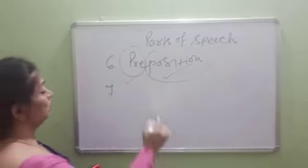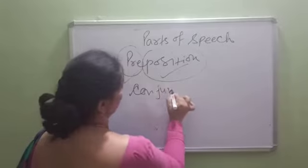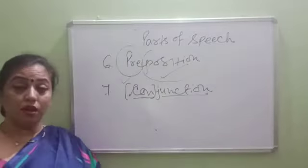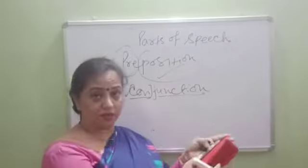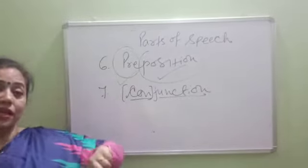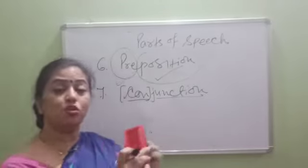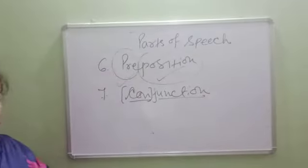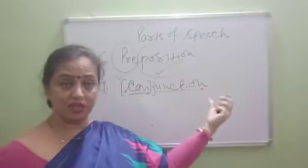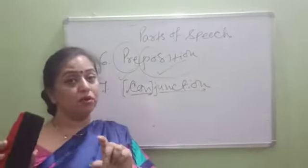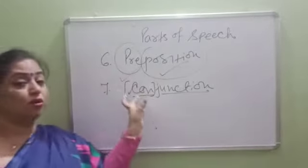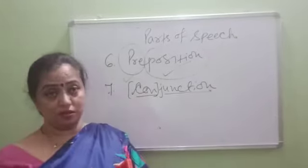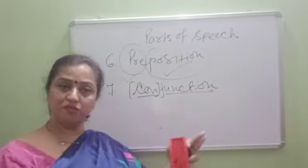Then coming to the next part of speech, which is conjunction. What is conjunction? It is a connecting word — the word used for connecting sentences or words. For example, 'He came and he took his book and went out.' The word 'and' is joining the sentences. Conjunctions are words which join two different sentences or two different words.